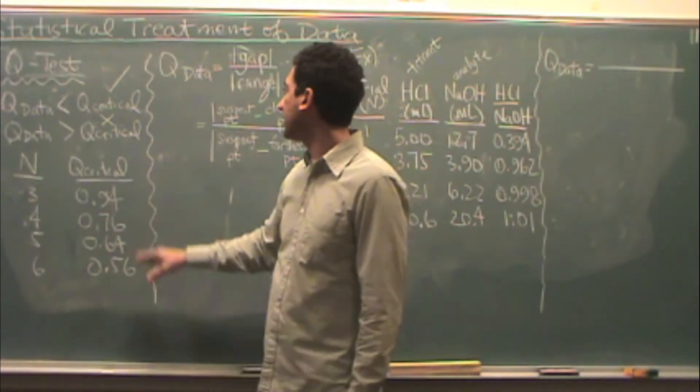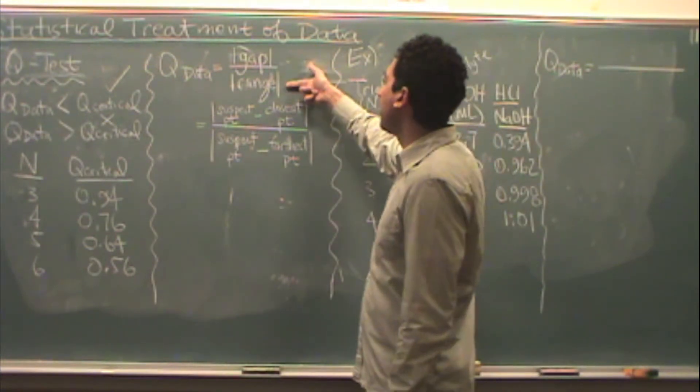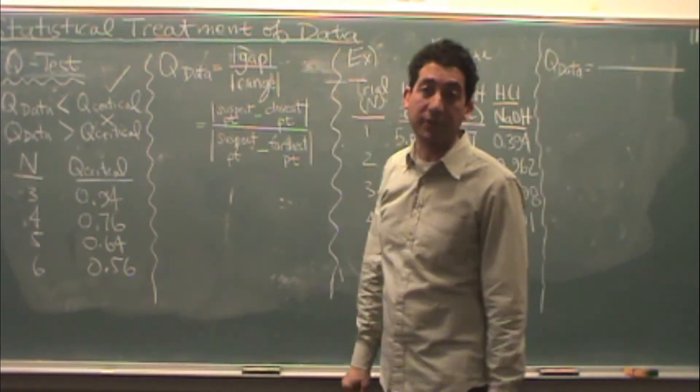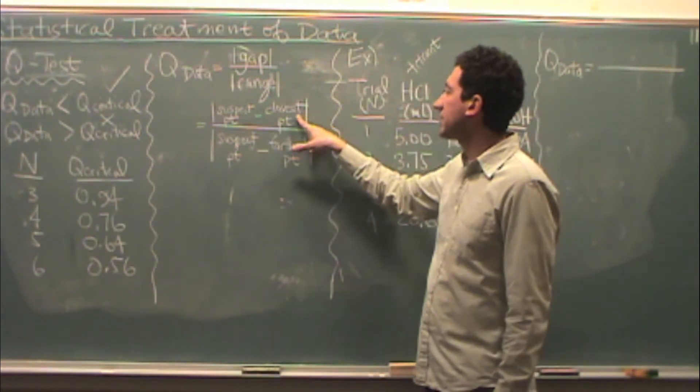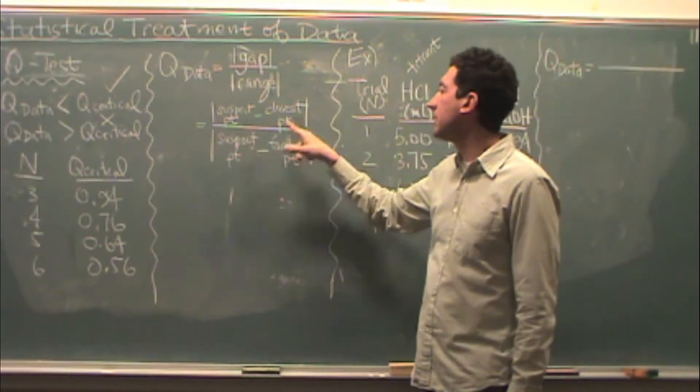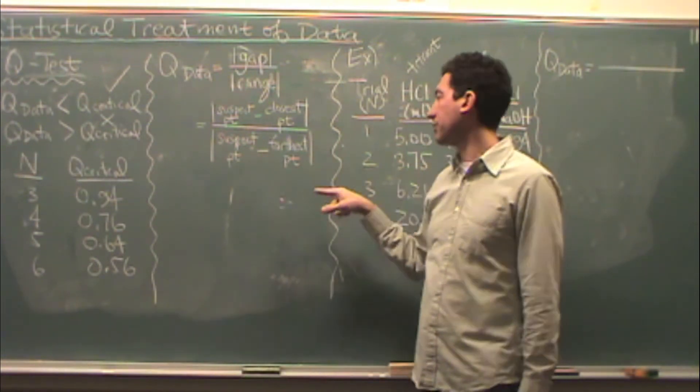If you don't have this table you need to write it down. Q data is literally from your data. We calculate the gap over the range and the absolute value of each of those. The gap is your suspect point that you think might be bad data subtracted from the closest numerical point to it and then divided by the range, the suspect minus the furthest numerical point from it.